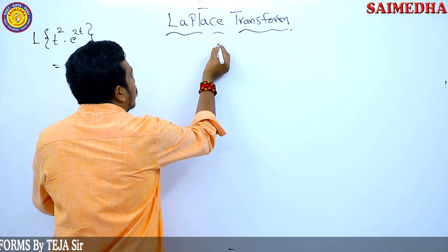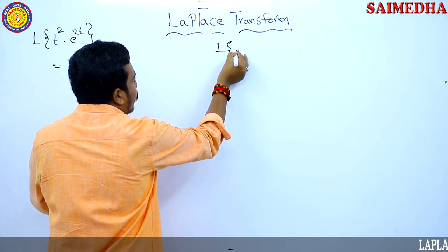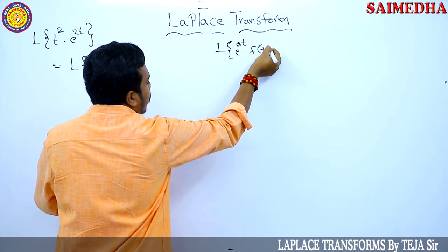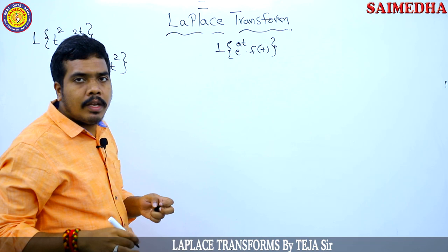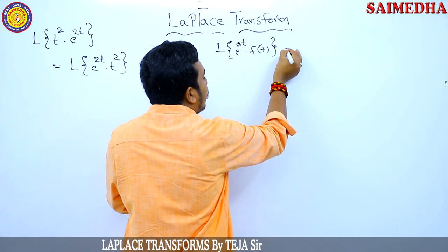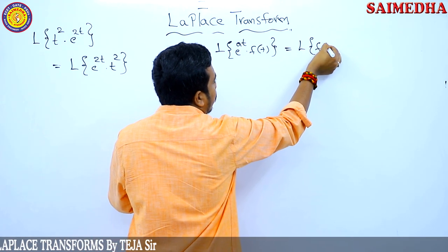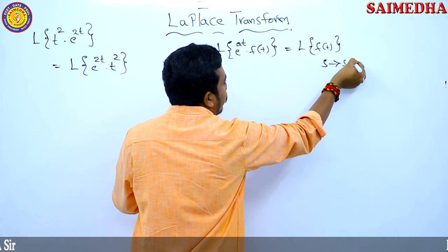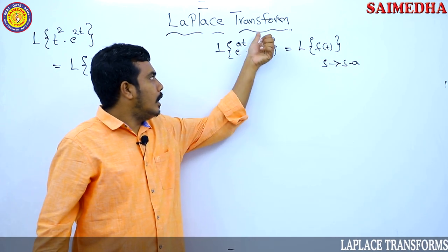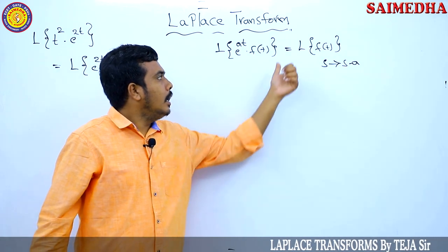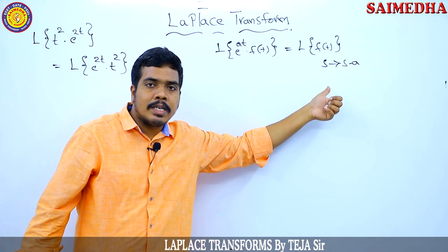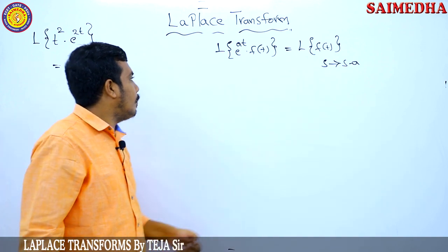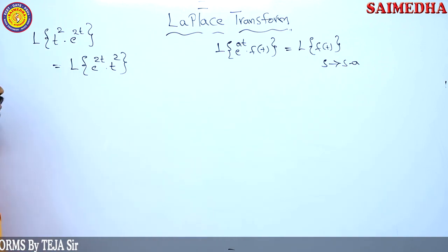By the first shifting theorem, the Laplace transform of e^(at) into f(t) equals the Laplace transform of f(t) where s is replaced with s minus a. Here a equals 2, so we apply the formula with s replaced by s minus 2.